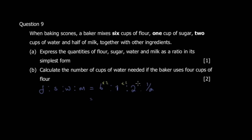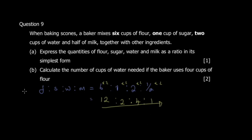Multiplying throughout by 2: flour becomes 12, sugar becomes 2, water becomes 4, and milk becomes 1. So the ratio in simplest form is 12 : 2 : 4 : 1. That's part a. Part b asks us to calculate the number of cups of water needed if the baker uses 4 cups of flour.